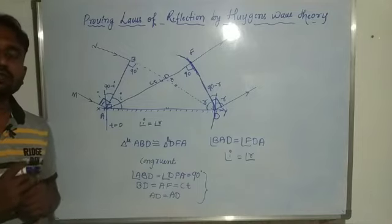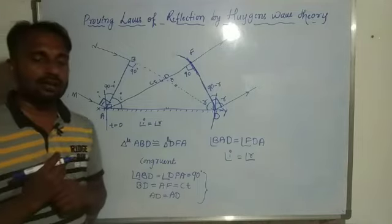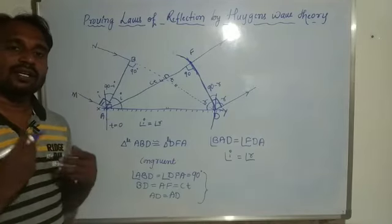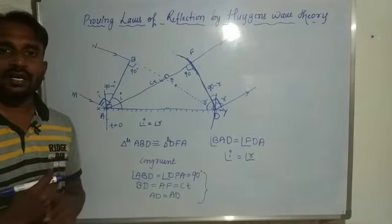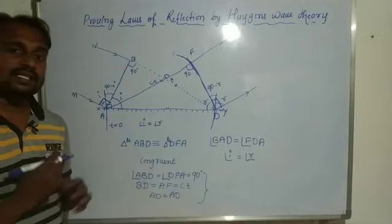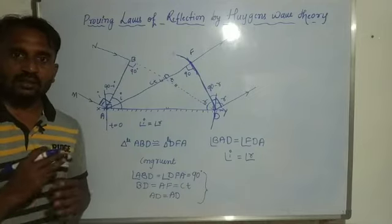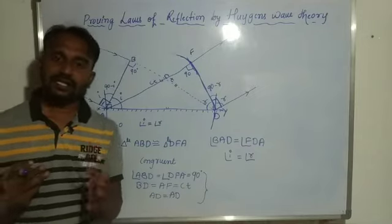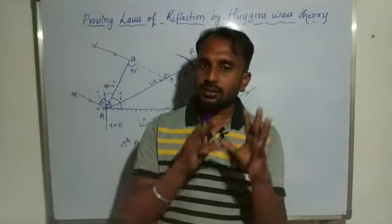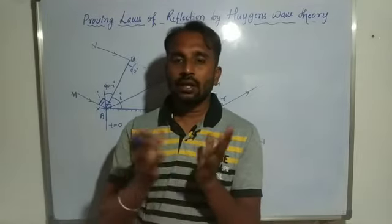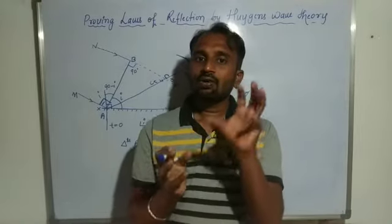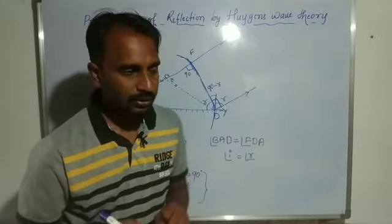The second law of reflection states that the incident ray, reflected ray, and normal at the point of incidence all lie on the same plane. These three — incident ray, reflected ray, and normal — always lie on the same plane.